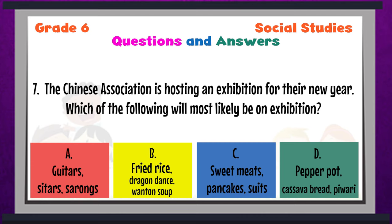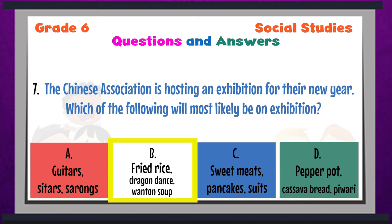Question 7: The Chinese Association is hosting an exhibition for their new year. Which of the following will most likely be on exhibition? A — guitars, sitars, and sarongs; B — fried rice, dragon dance, wanton soup; C — sweet meats, pancakes, soots; or D — pepper pot, cassava bread, paiwari. The answer to question 7 is B — fried rice, dragon dance, wanton soup. These are all contributions made to Guyanese society by the Chinese.